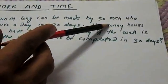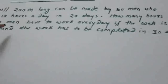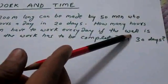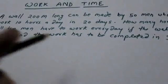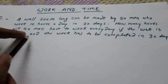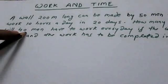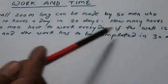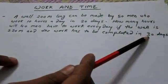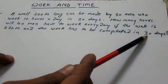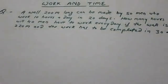A wall 200 meters long can be made by 50 men who work 10 hours a day in 20 days. How many hours will 40 men have to work every day if the wall is 220 meters and has to be completed in 30 days? Notice: the number of men decreased from 50 to 40, the wall length increased by 20 meters, and the number of days increased from 20 to 30.